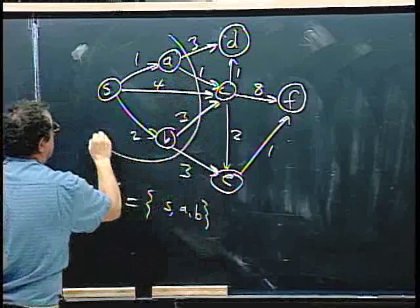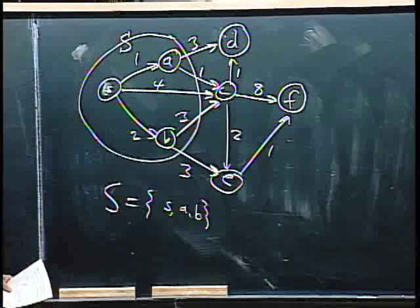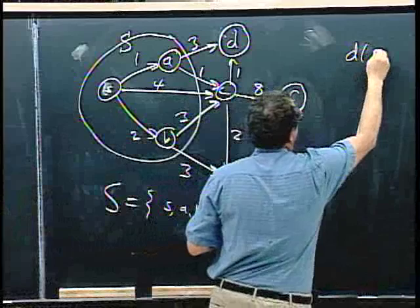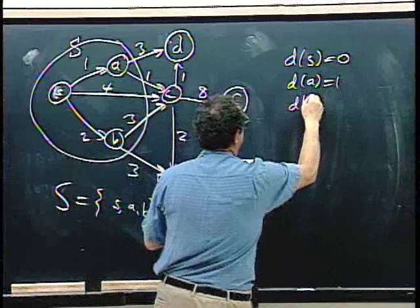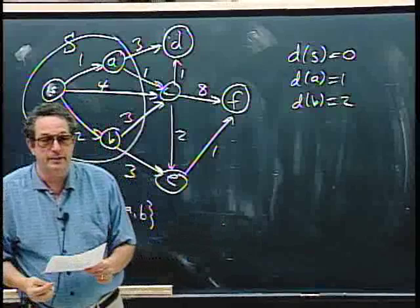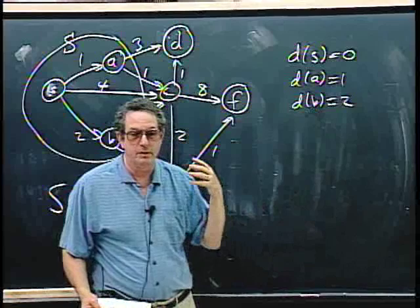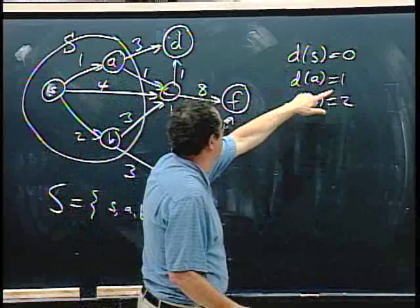At this point, D(s) = 0, D(A) = 1, and D(B) = 2 — assuming the algorithm has correctly computed these. Now let's look at the D′ values for nodes not yet in S. D′(D) = 4, because the only way to reach D through a node in S is through A: D(A) + 3 = 1 + 3 = 4.